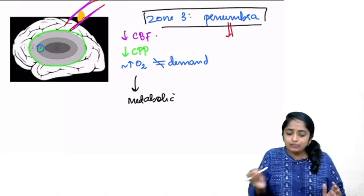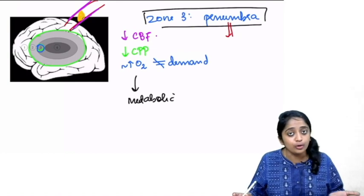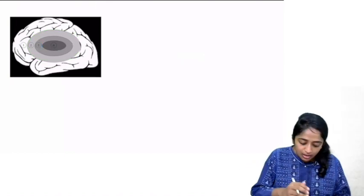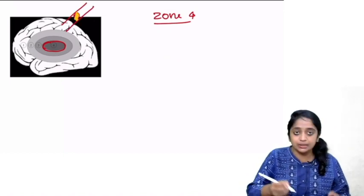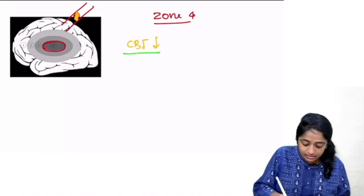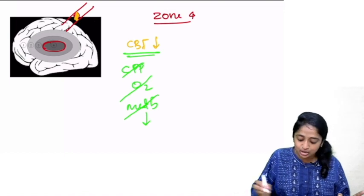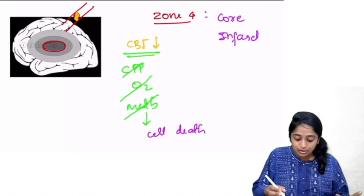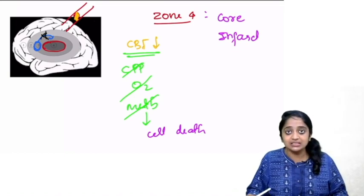Why is penumbra our area of interest? If we give external support — reperfusion — it can come back to normal; it can shift to oligemic area and eventually become normal. If not supported, it will inevitably undergo cytotoxic edema, cell death, and ultimately become core infarct. Zone 4, the central portion, is the area maximum dependent on the occluded vessel. There, CBF is decreased, perfusion pressure is not maintained, oxygen extraction fails, metabolism collapses, and the area has actually undergone cell death or cytotoxic edema — zone 4 is the core infarct zone. Our aim is to prevent zone 3 from slipping into zone 4.